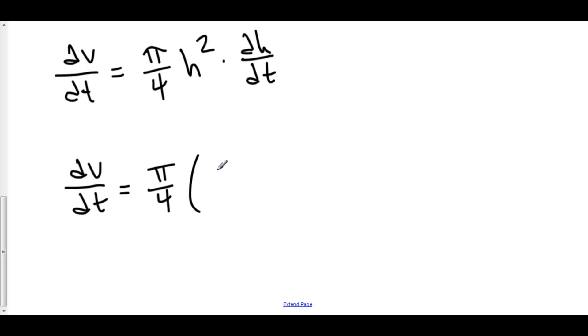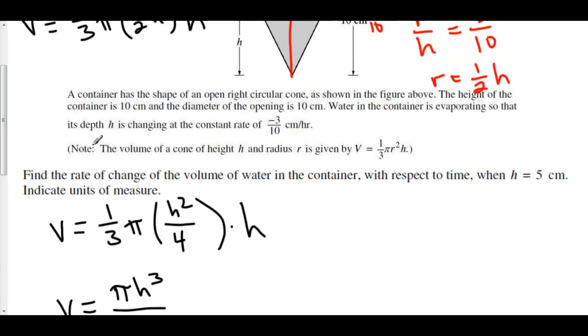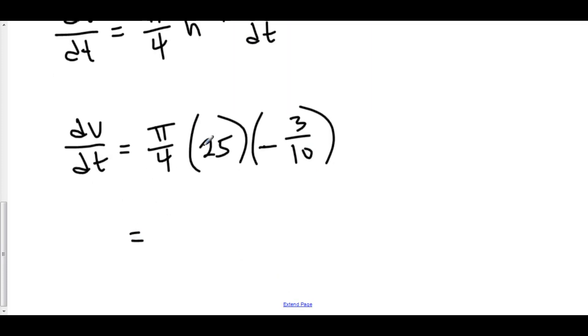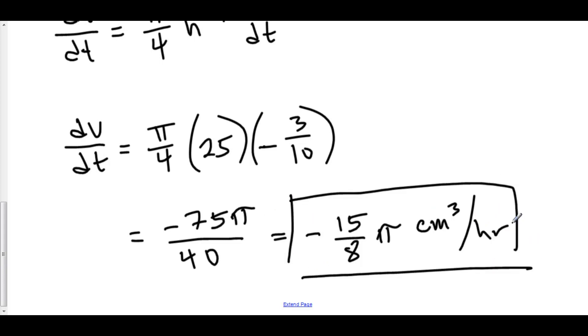dv dt is equal to pi over 4. H, at this particular moment, is 5. So h squared is 25. And dh dt, they told us, is negative 3 over 10. And so here we have 25 times negative 3 is negative 75 pi over 4 times 10 is 40. And this yields negative 15 over 8 pi. Let's see, v is in centimeters cubed. And t is in hours. So this is the rate of change of the volume of the cone at this precise moment when the height is 5 centimeters. Negative 15 over 8 pi centimeters cubed per hour.